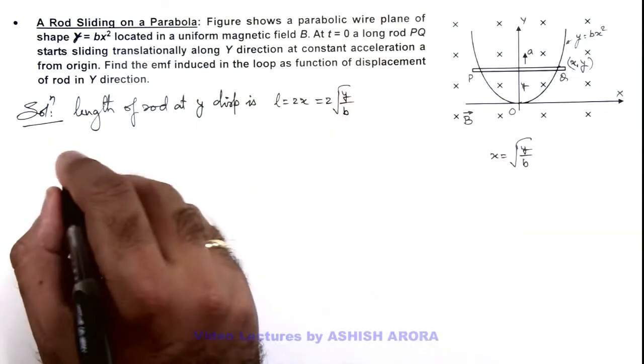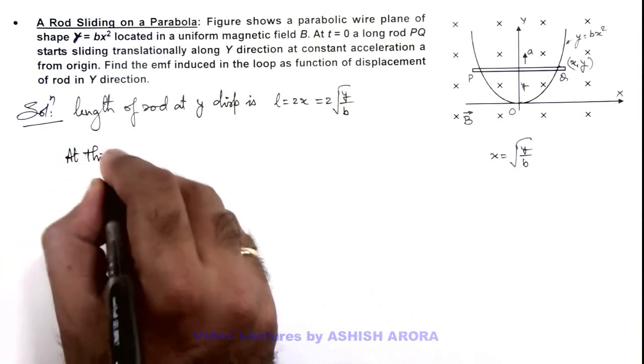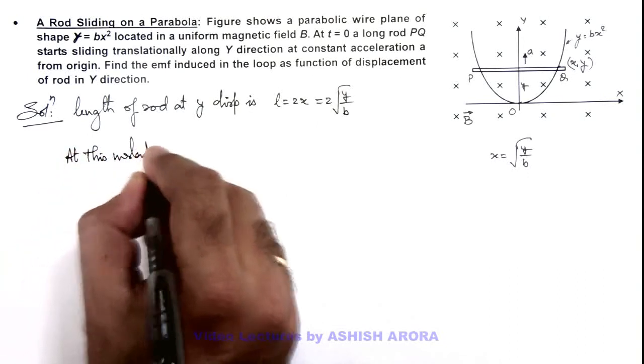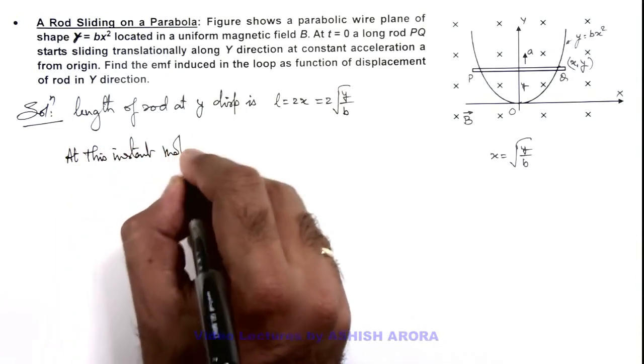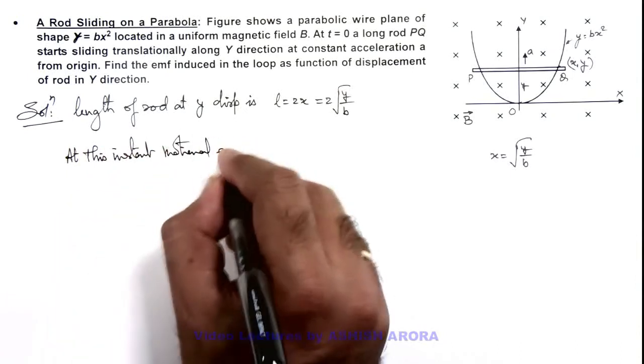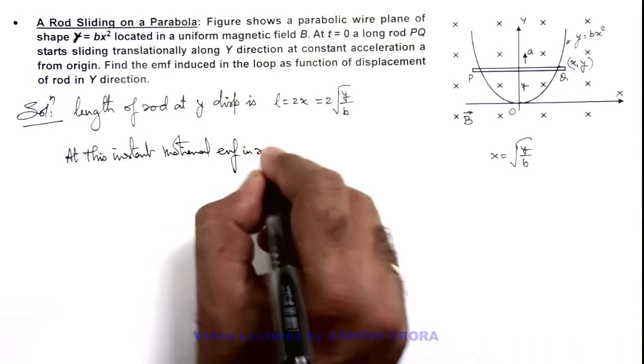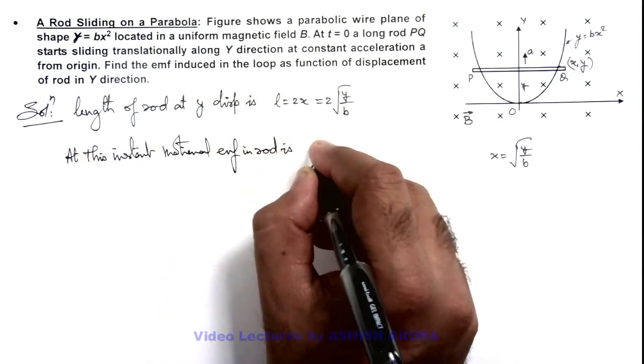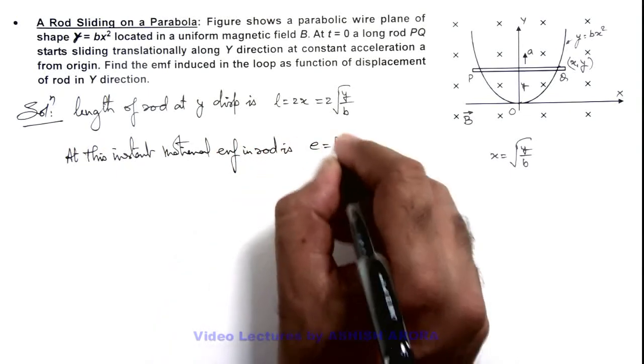So we can calculate at this instant motional EMF in rod. This motional EMF we can write as BvL.